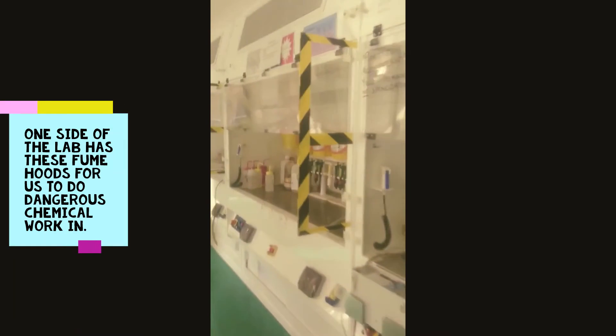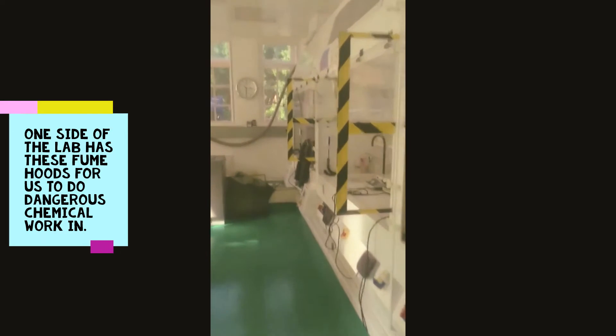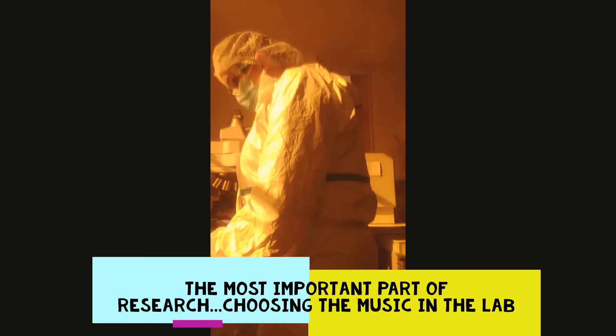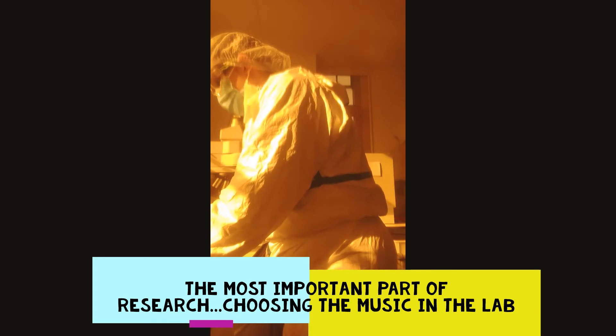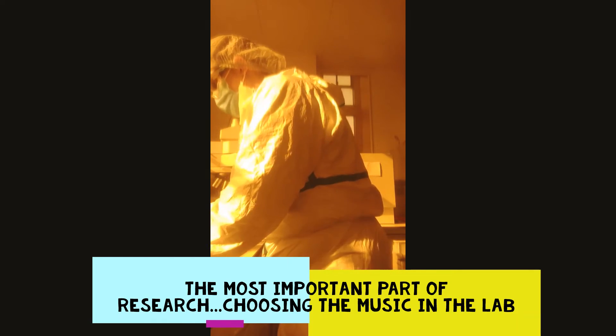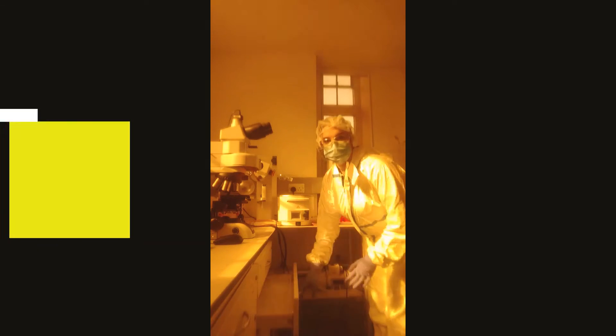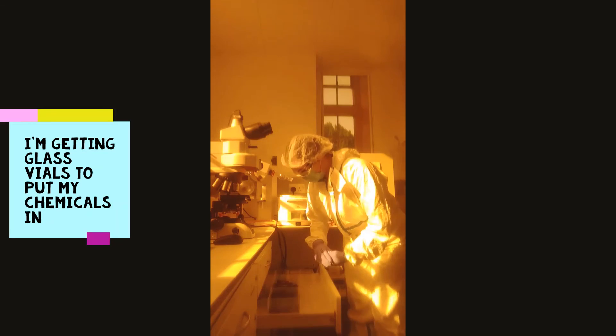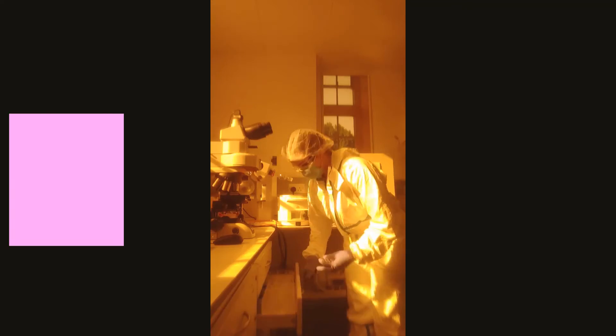So in here we have more of the glove boxes, but we also have basically an entire chemistry lab in here. It has these things called fume hoods which you can see on the right, and that's where we do our dangerous chemical work because it protects us from it. We do pretty much everything here. So here I am choosing the music I'm going to listen to for my day. I'm putting on some Beyoncé, and now I'm starting to get everything ready for my experiments. Kind of like with cooking, it's super important to have everything ready. I'm getting my vials and I'm going to put my chemicals in these vials.